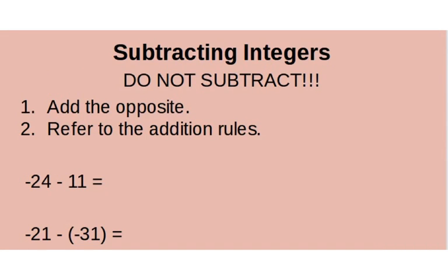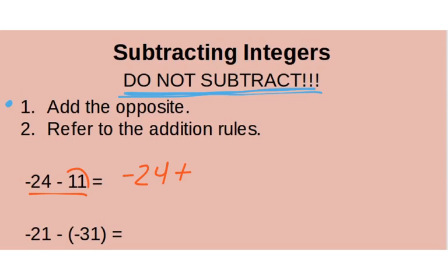Now we're going to subtract integers — this is the tricky part. Do not subtract. Instead, change it into an addition sentence by adding the opposite, and then refer back to the addition rules. For example, negative 24 minus 11: change it to negative 24 plus negative 11, because the opposite of 11 is negative 11.